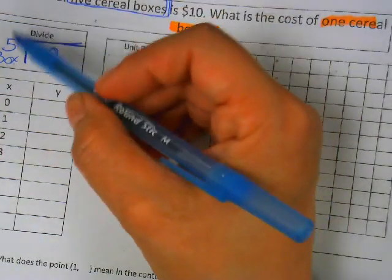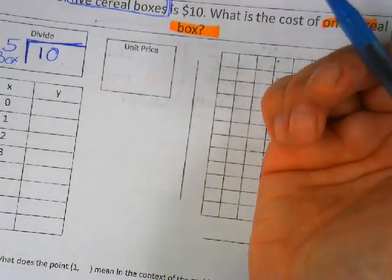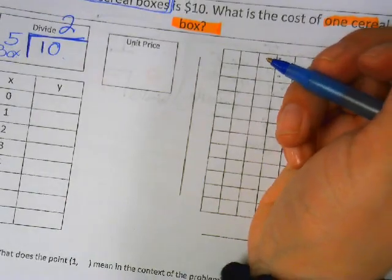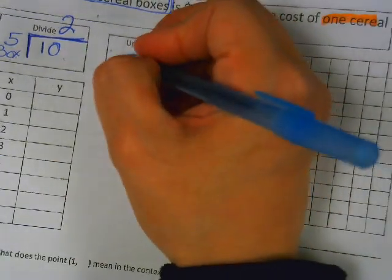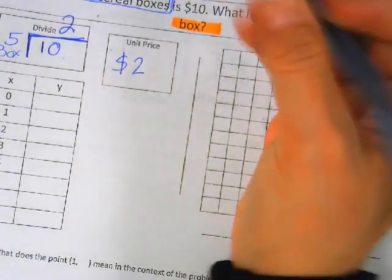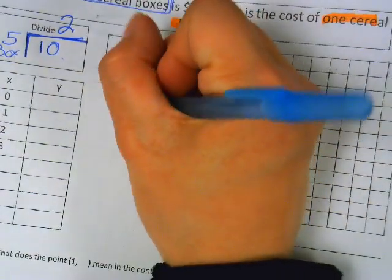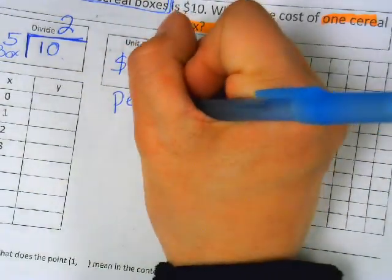How many times does five go into ten? Two. Now what does two mean? So it means two dollars. That's my unit price or my unit rate. Two dollars per cereal box.